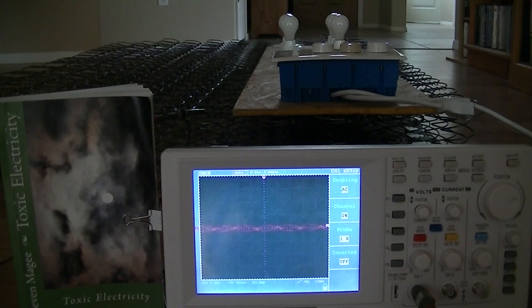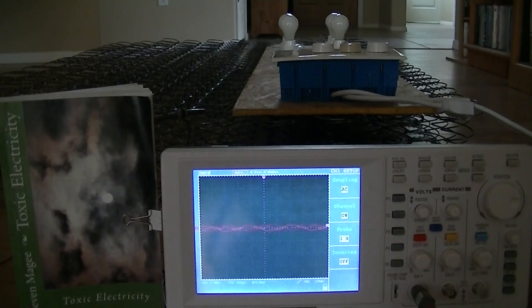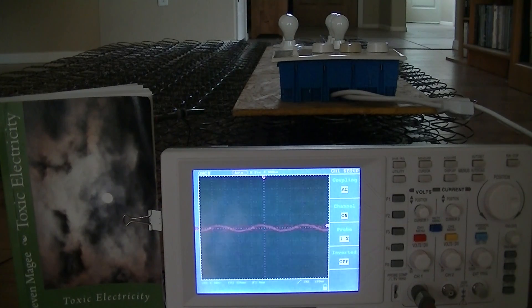In the foreground we have an oscilloscope that is measuring the voltage on the mattress. As you can see right now, the voltage is quite low. Our settings are one volt per division in the vertical direction and five milliseconds per division in the horizontal direction.